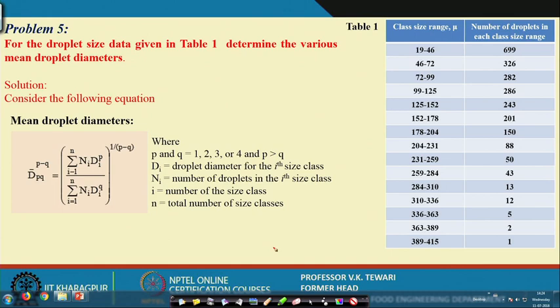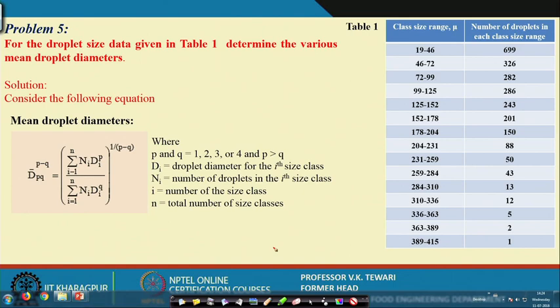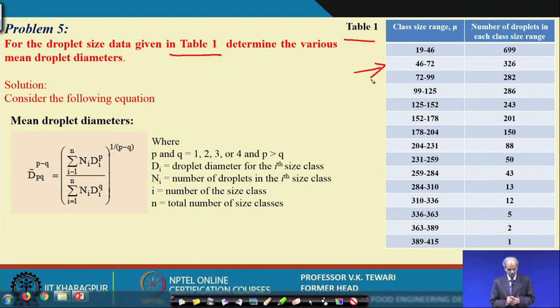We discussed about the particle size, the droplet size, the distribution of that, and what are the different classes in which the particle size is situated when we spray chemicals at varying sprayer pressures as well as flow rate. Droplet size data is given in table 1. From this table, determine the various mean droplet diameters.